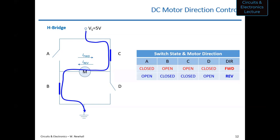I wanted to continue today and finish up the topic of motors. We talked about DC motors, speed control, and directional control. What you see on the screen right now is an H-bridge built using switches, but for electronic control that's not realistic — you don't want mechanical switches in your circuit.